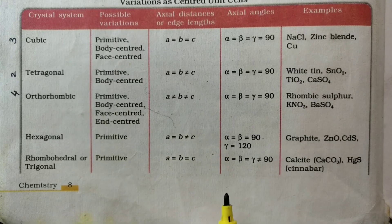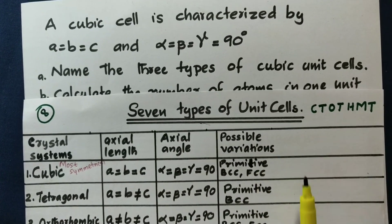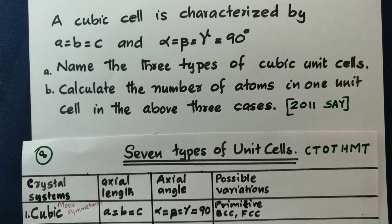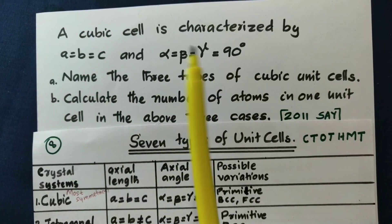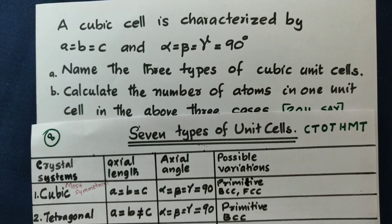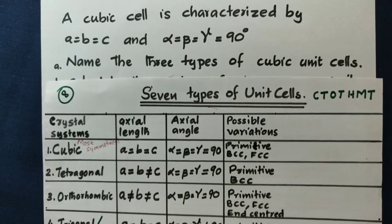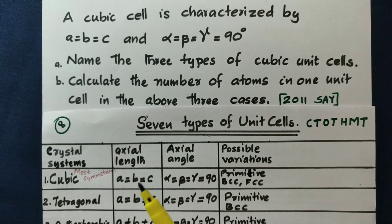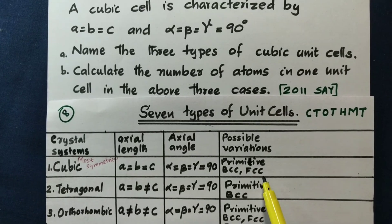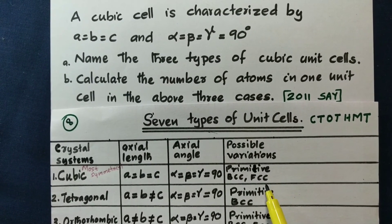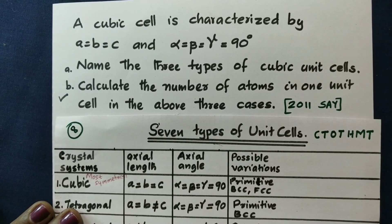Let's take a look at this table. If you ask a question about the cubic unit cell: A equal to B equal to C is a cubic cell. Name three types of cubic unit cell — primitive, BCC, FCC. Calculate the number of atoms in one unit cell in the above three cases. This calculation is very important — we have taught you the whole class.